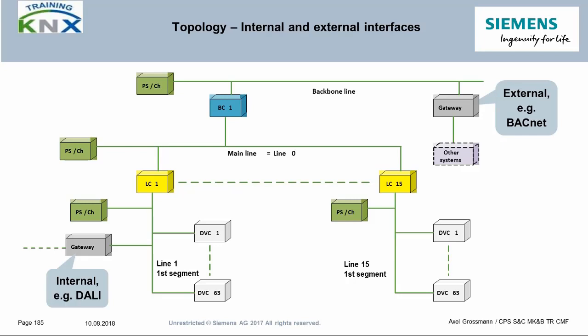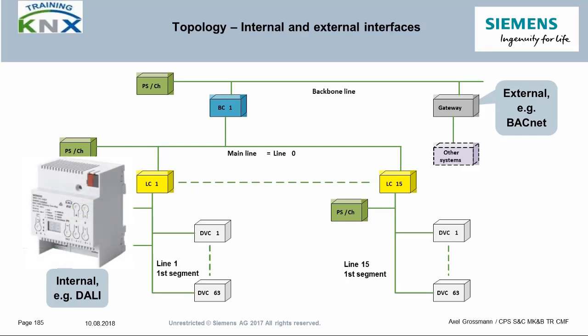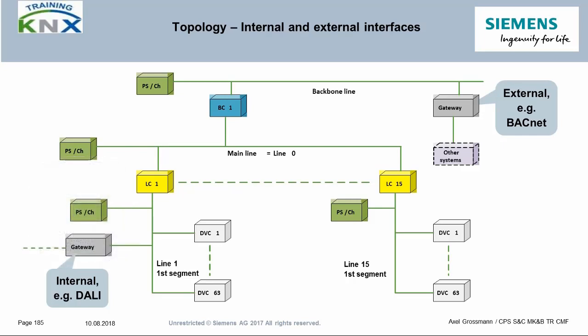As for internal interfaces, the KNX bus is a frequent host for the lighting bus called DALI. Such gateways must be in the sublines, but the possible telegram traffic load must also be observed closely, since a DALI line can have up to 64 dimming channels plus scene control plus 16 sensors.